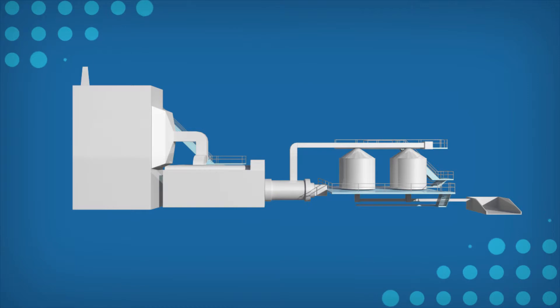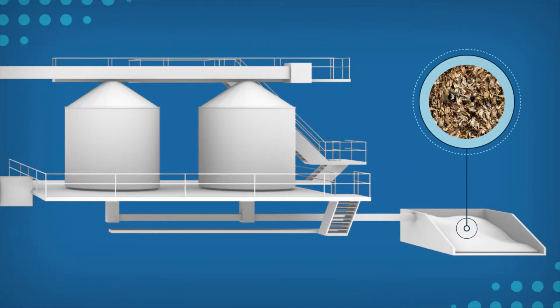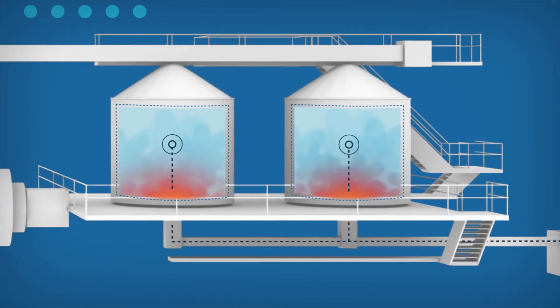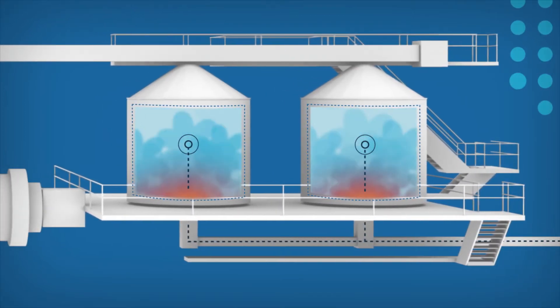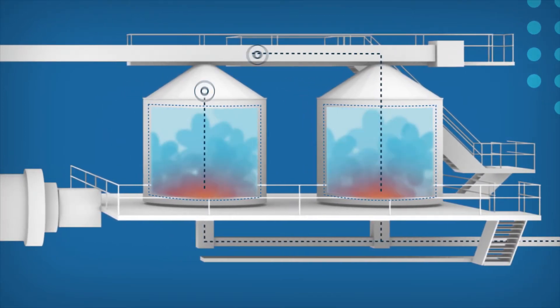The process is straightforward. First, gasifiers convert wood waste that would otherwise be destined for a landfill into a combustible syngas. Through this we're putting wood waste to good use in an energy supply chain.